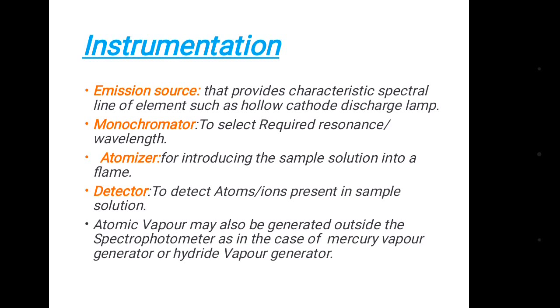A detector is used to detect atoms or ions present in the sample solution. Atomic vapor may also be generated outside the spectrophotometer, as in the case of a mercury vapor generator or hydride vapor generator.